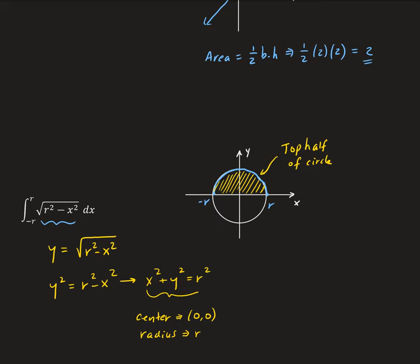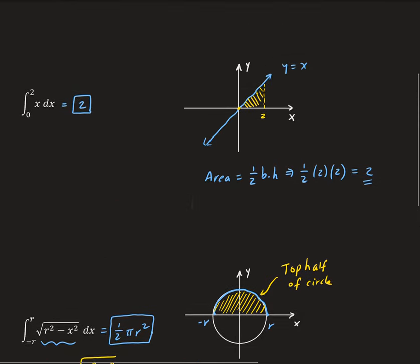Therefore, the area is equal to one half pi r squared. That's the solution to this integral. And that is how you can use geometry to evaluate integrals.